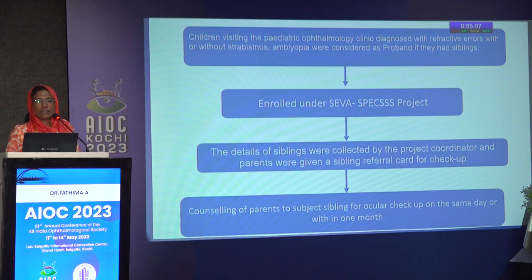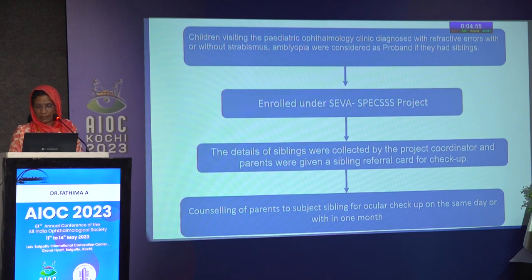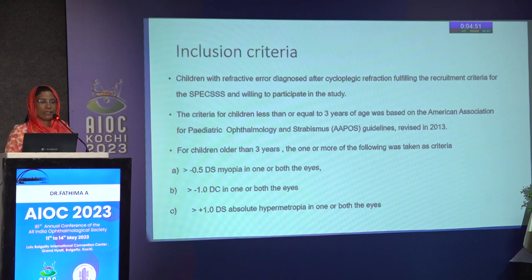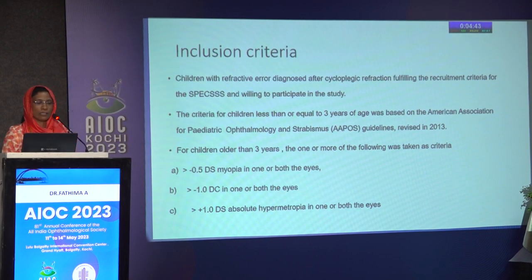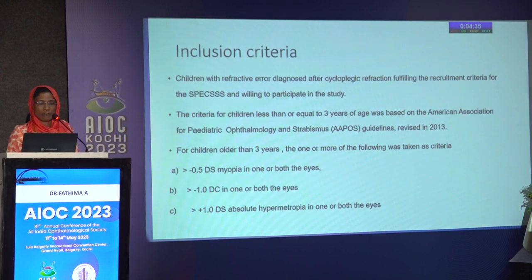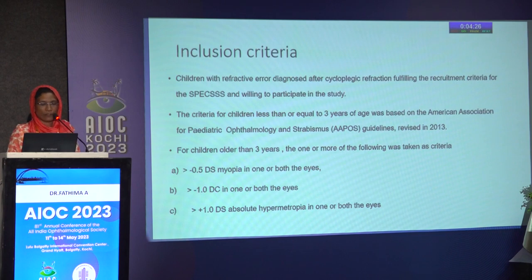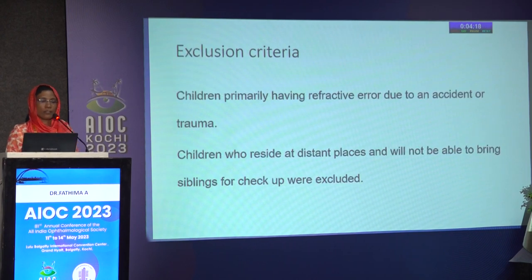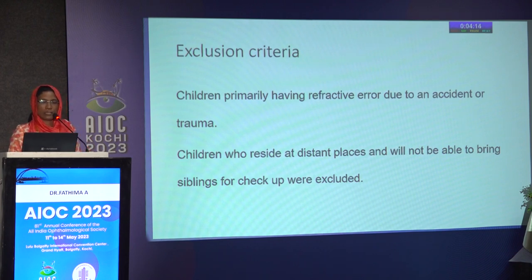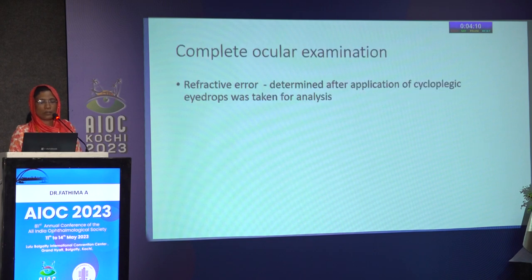The methodology includes a cross-sectional pilot study done in children aged 0 to 15 years under the project named Systematic Pediatric Eye Care through Sibling Screening Strategy, with support of SEVA organization USA. Children visiting pediatric ophthalmology with refractive error who had siblings were enrolled. Inclusion criteria followed AAPOS guidelines revised in 2013 for children under 3 years, and for older children: more than -0.5 diopter for myopia, more than -1 diopter cylinder for astigmatism, and more than +1 diopter for hypermetropia. Children with refractive error due to trauma and those unable to follow up were excluded.